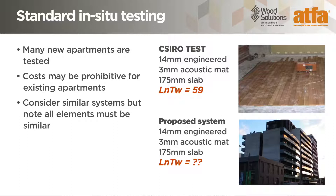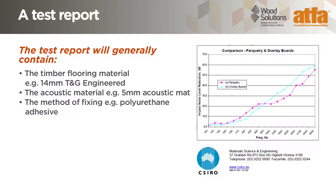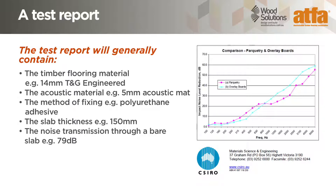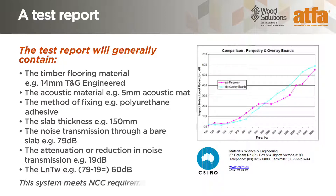Many companies supplying acoustic underlays have systems that have been tested and can be used as a guide. A test done by the CSIRO of a specifically dimensioned flooring system may produce slightly different LnTW results to an identical system you are proposing. The test report for a floor system will generally contain details including the timber flooring material, for example 14mm engineered flooring; the acoustic material, for example 5mm acoustic mat; the method of fixing, such as polyurethane adhesive; the slab thickness, which could be 150mm; the noise transmission through the bare slab; the attenuation or reduction in noise transmission; and the LnTW result. The conclusion could be that the system tested meets the NCC requirements, but would not achieve a high star rating with the AAAC.